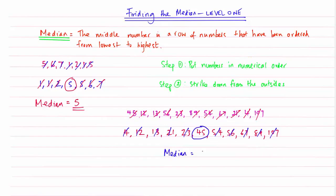So my median of this set of numbers is 45. So that's how you find the median when there are an odd number of numbers written in a row.